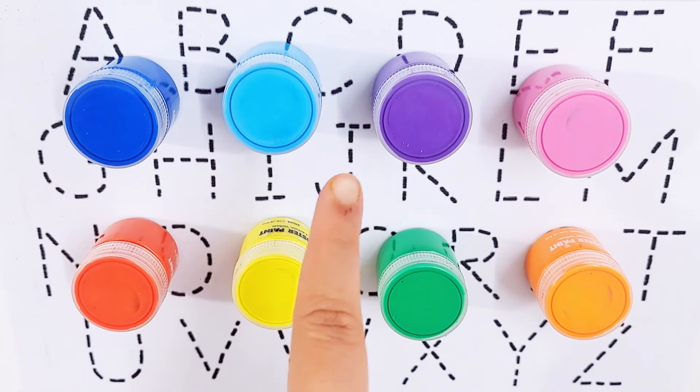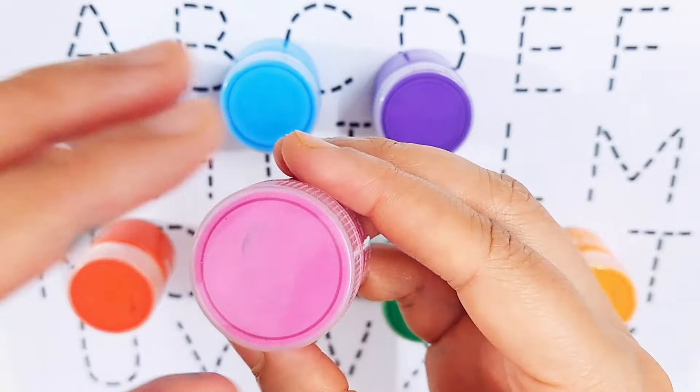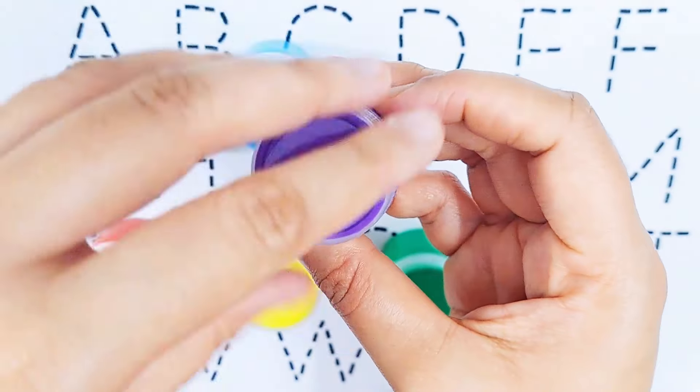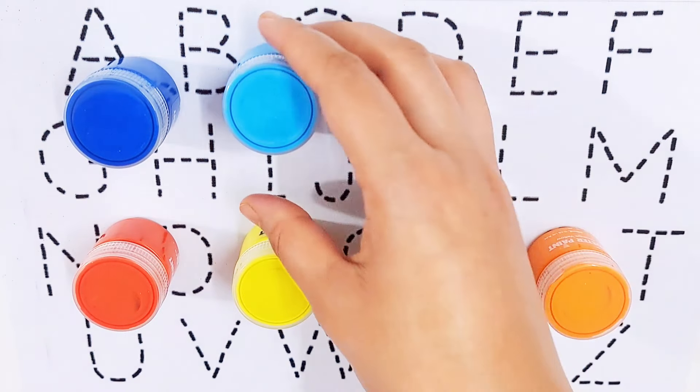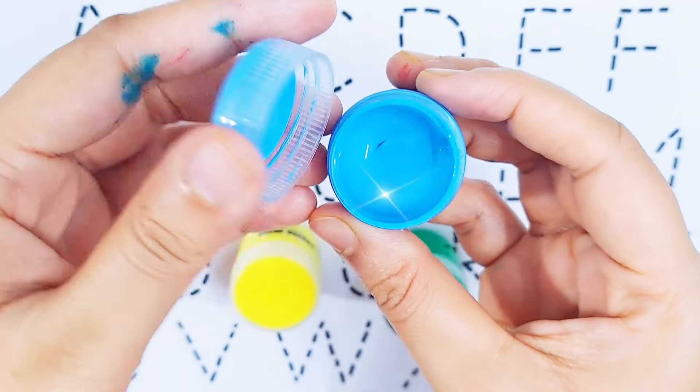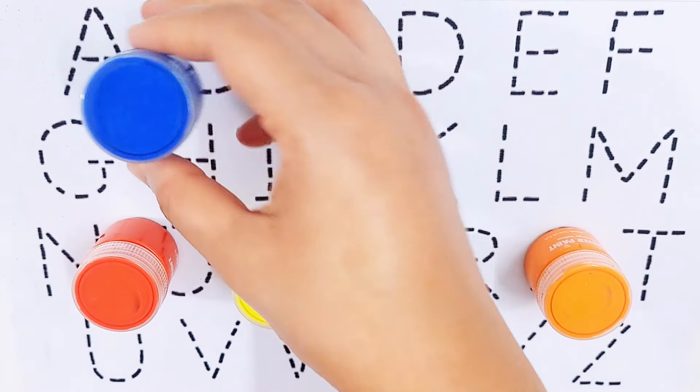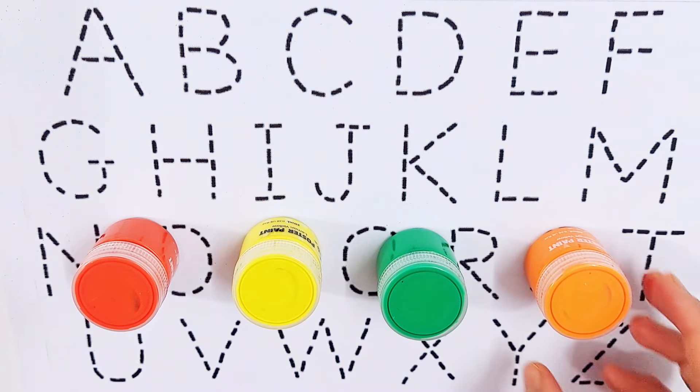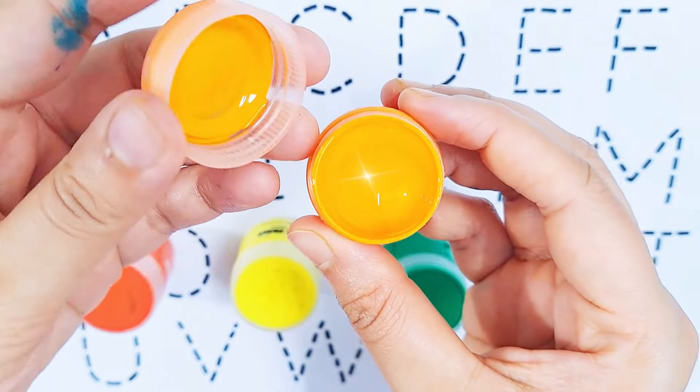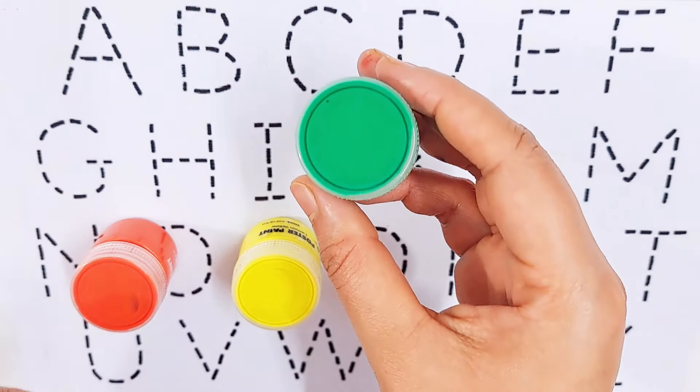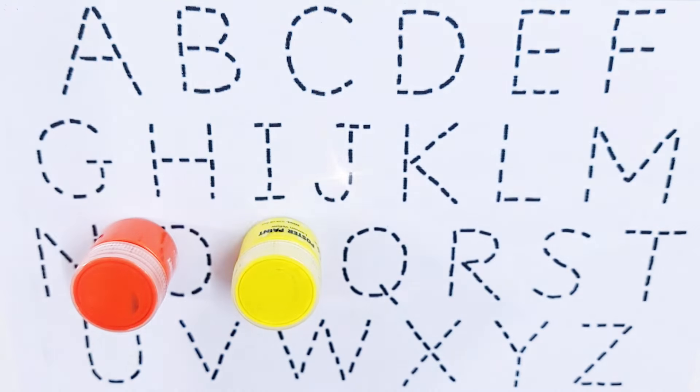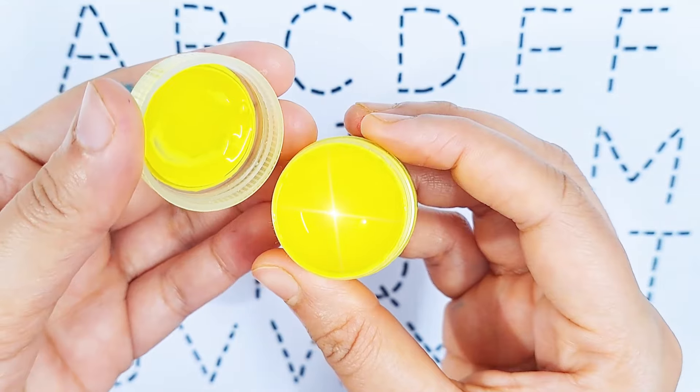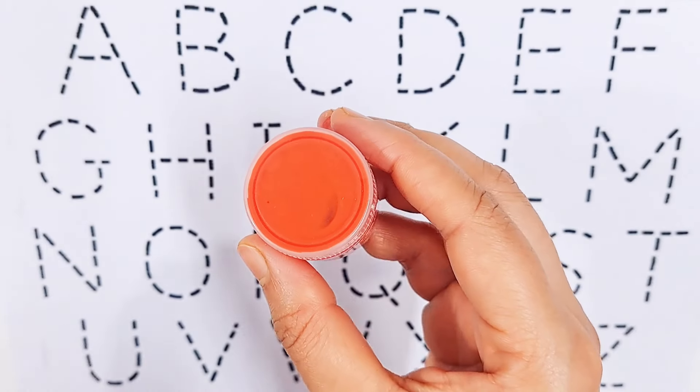Hello kids, let's learn some color names. Pink color, violet color, sky blue color, dark blue color, orange color, green color, yellow color, red color.